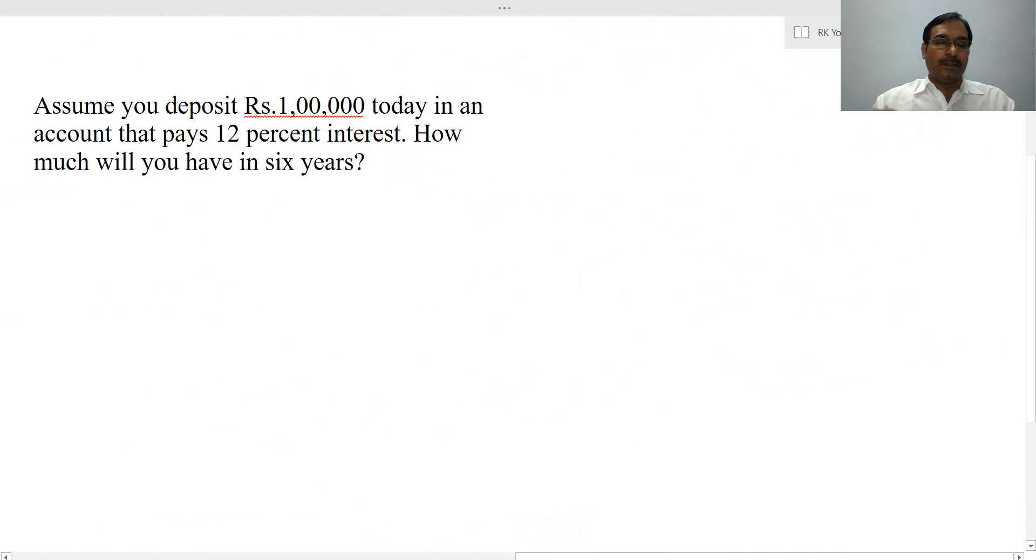We'll take another example. Suppose you deposited 1,00,000 today in an account that pays 12% interest. How much will you have in 6 years? So your timeline: periods 0 to 6 years. 1, 2, 3, 4, 5, 6 years. Rate of interest is 12%. Cash flow, so the present value is minus 1,00,000. And what is your future value?